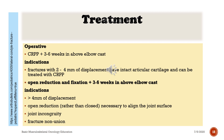Operative Treatment — Closed reduction percutaneous pinning with 3 to 6 weeks in above-elbow cast. Indications: fractures with 2–4 mm of displacement with intact articular cartilage can be treated with closed reduction percutaneous pinning. Open reduction and internal fixation plus 3 to 6 weeks in above-elbow cast. Indications: greater than 4 mm of displacement; open reduction rather than closed is necessary to align the joint surface; joint incongruity.